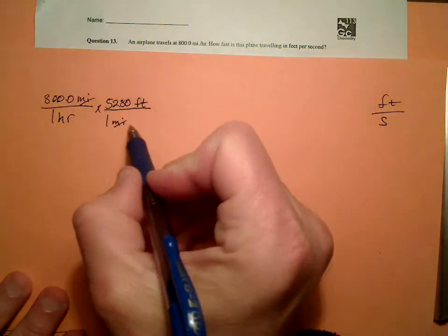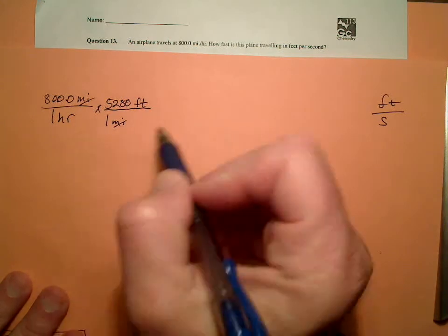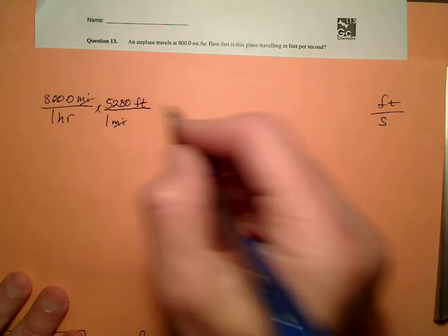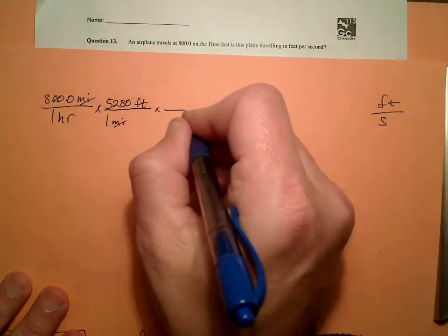If I were to stop now, the units of my answer would be feet per hour. But I don't want feet per hour, feet per second. So I got the numerator taken care of, so now I have to work on the denominator.